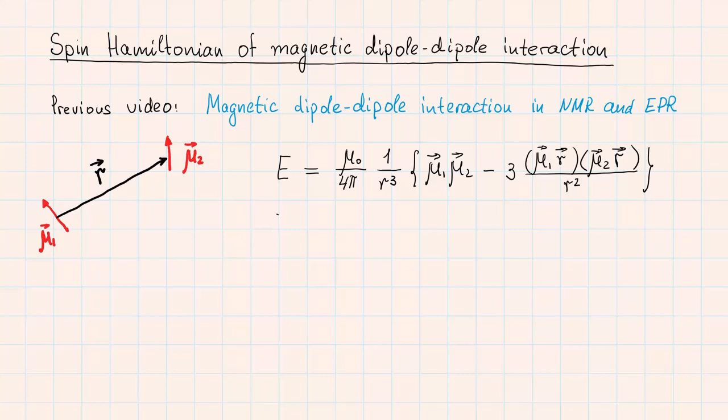It is more or less clear how to use this formula in the classical case. One needs to specify three vectors mu1, mu2 and r, which are enough to perform computation of energy via this formula. In quantum mechanics, the usage of this formula is a little bit more complicated.